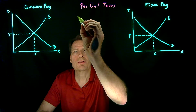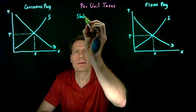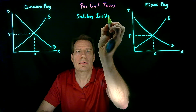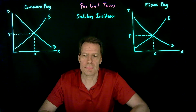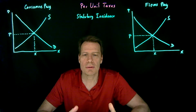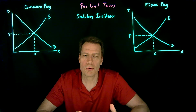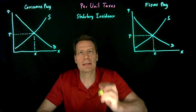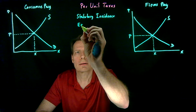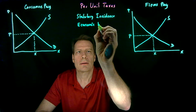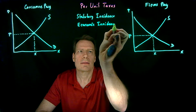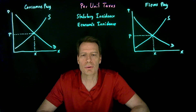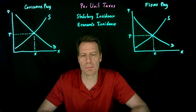Now that's called the statutory incidence of the tax — in other words, who pays as envisioned by the statute that imposes the tax law. Now that turns out to be different from the economic incidence of the tax. The economic incidence is who actually pays for the tax, not who the law envisions as having to pay.